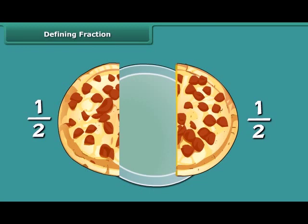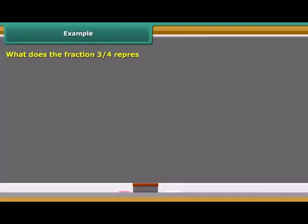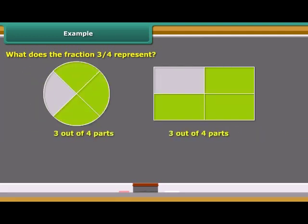For example, Ravi divides a pizza into two parts. What does the fraction 3 upon 4 represent? It represents three out of four parts. The shaded part of each figure below represents 3 upon 4 of the entire figure.